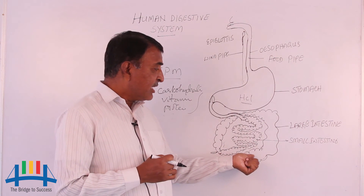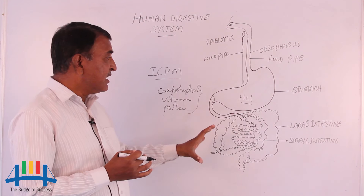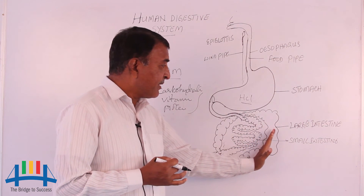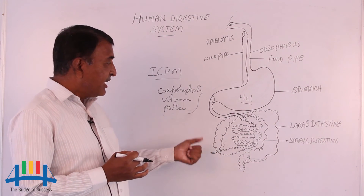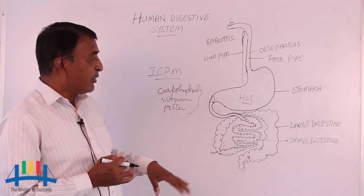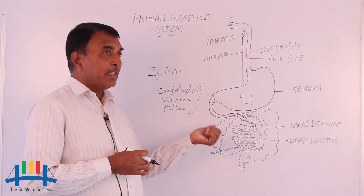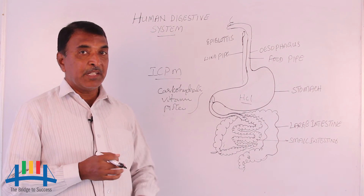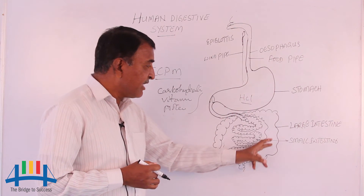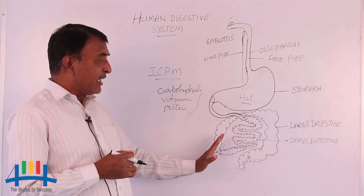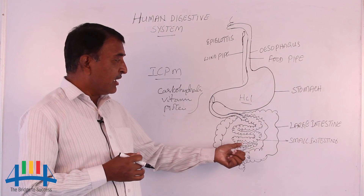Whenever there is a bacterial infection, people get diarrhea or dysentery — loose motions. Why? As soon as bacterial infection takes place, the large intestine loses its capacity to absorb water. When it is not functioning properly, more of the water present in the food comes out. Another important thing: whenever you are taking food, we have to take leafy vegetables. Leafy vegetables make the food move slowly through the large intestine, allowing more water to be absorbed.